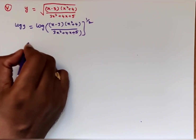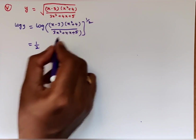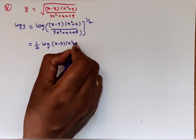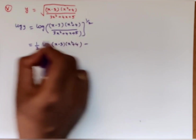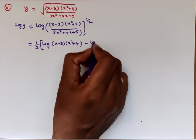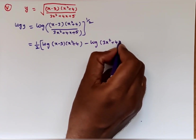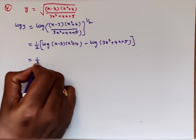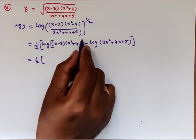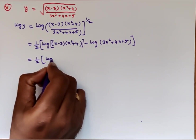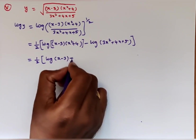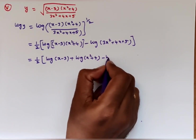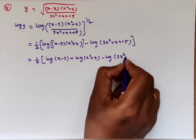By the power rule, this is (1/2)·log[(x minus 3)(x² plus 4) / (3x² plus 4x plus 5)]. Applying log(a/b) and log(ab) rules: (1/2)·[log(x minus 3) + log(x² plus 4) minus log(3x² plus 4x plus 5)].